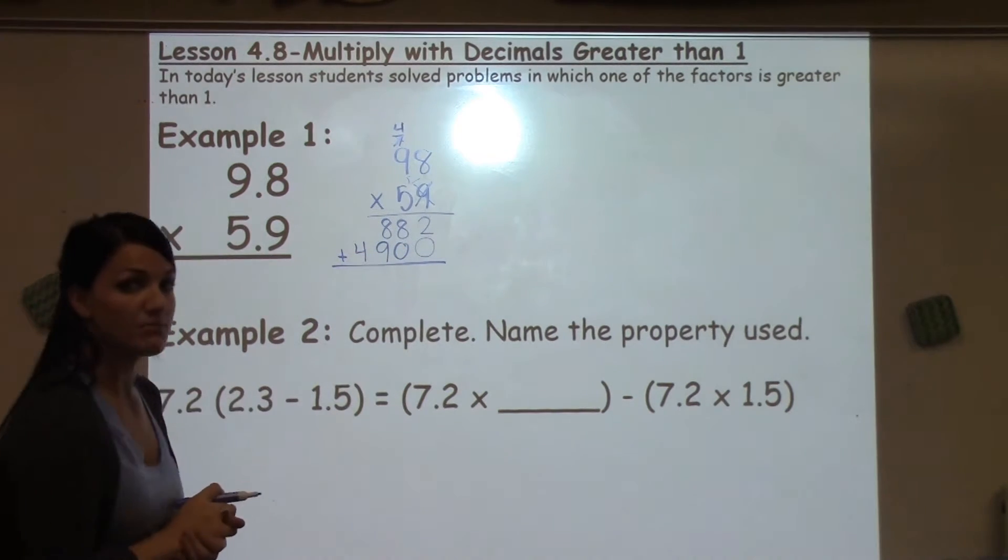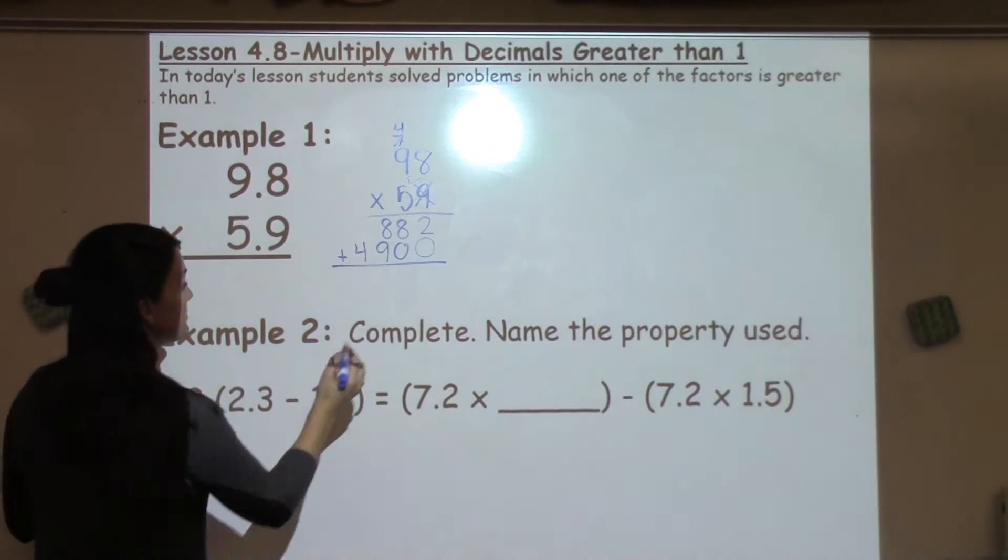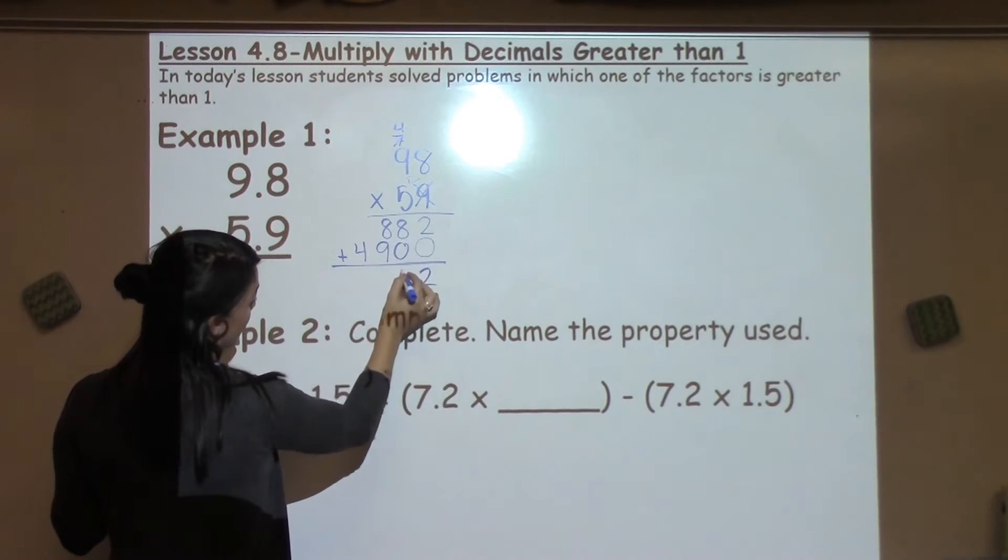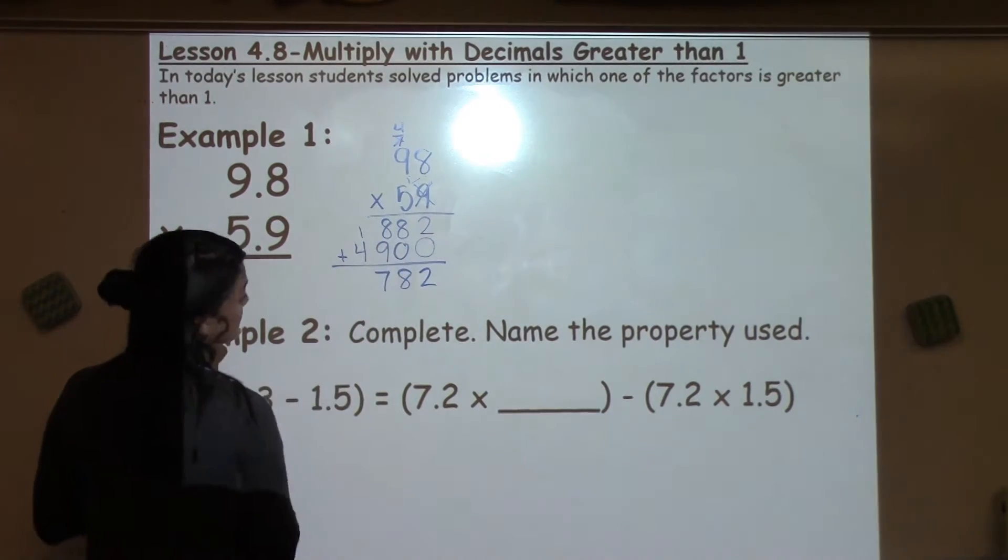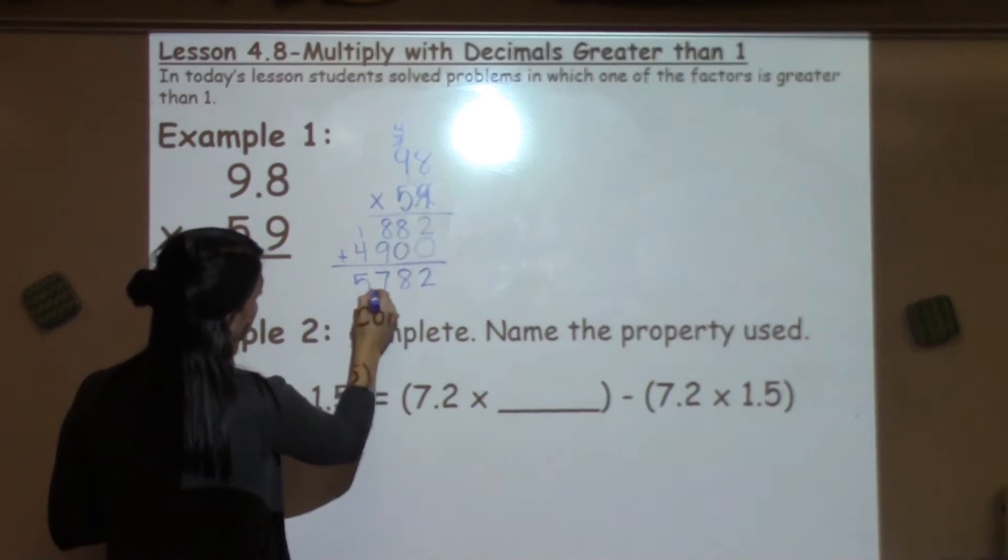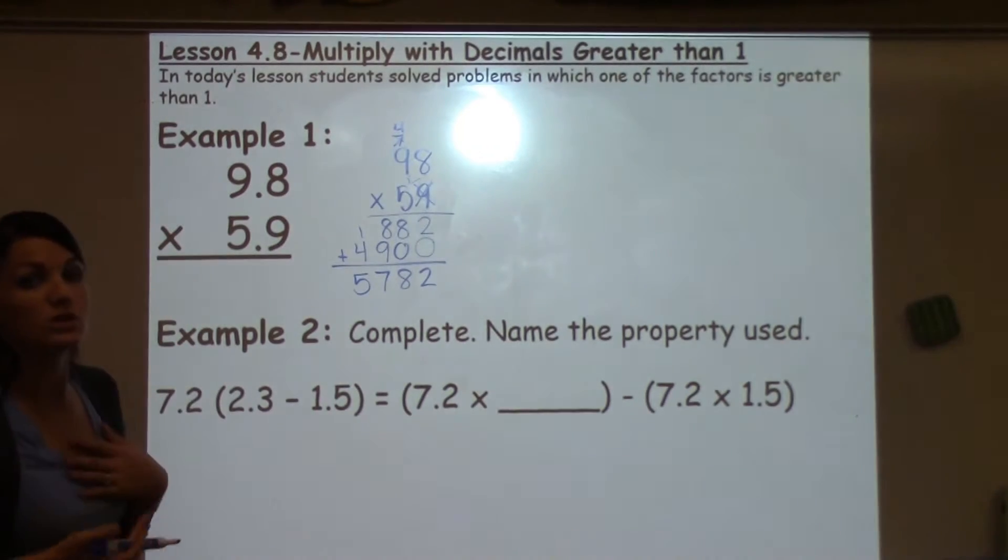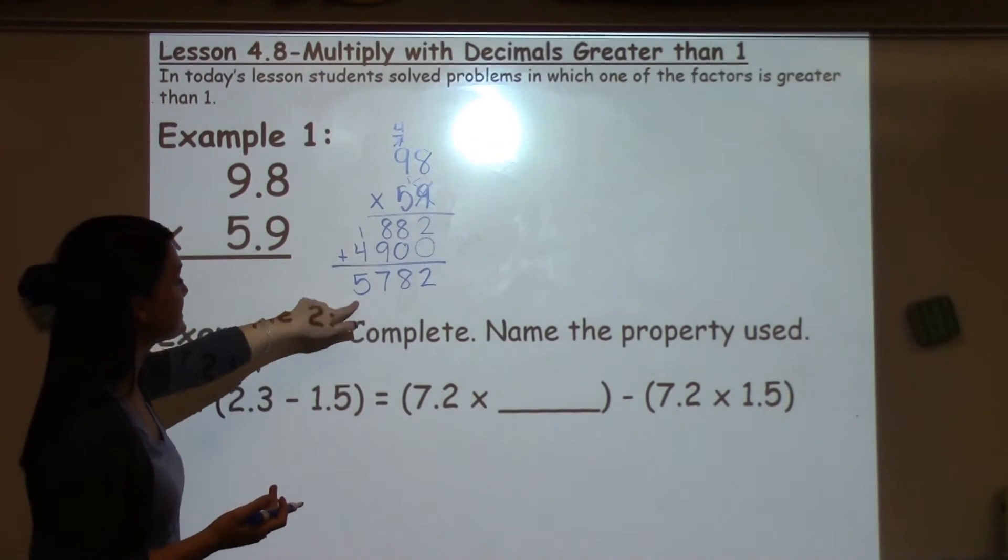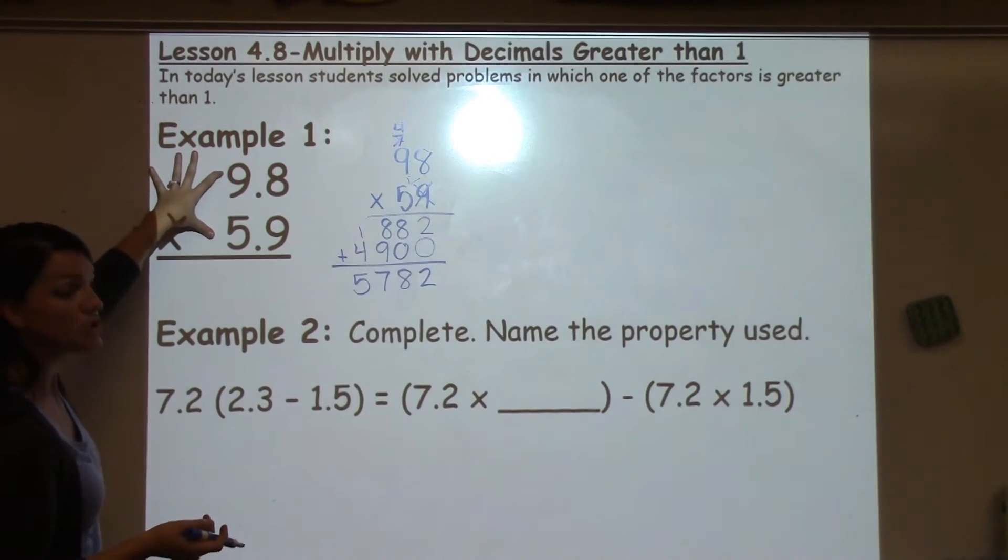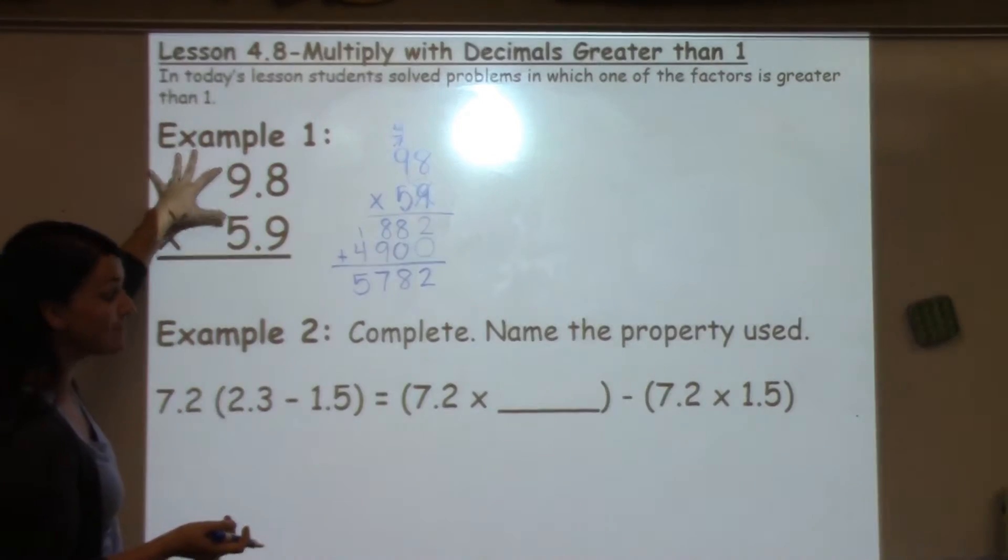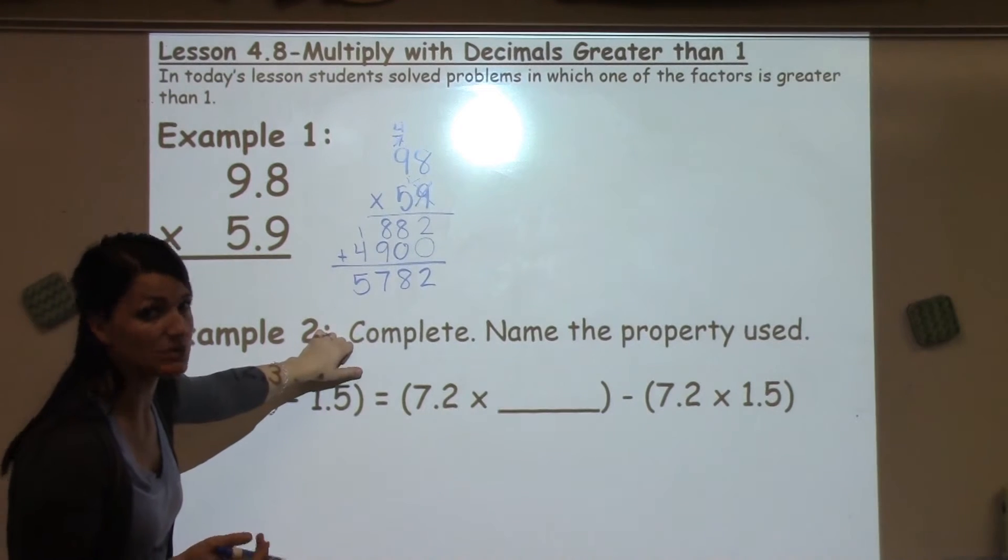Then I'm just going to add the numbers that I have down below. 0 plus 2 is 2, 8 plus 0 is 8, 8 plus 9 is 17, carry my 1. 1 plus 4 is 5. Now my answer would look like it's 5,782. But because I have decimal numbers that I was working with in my problem, I have to show those decimals in my answer.